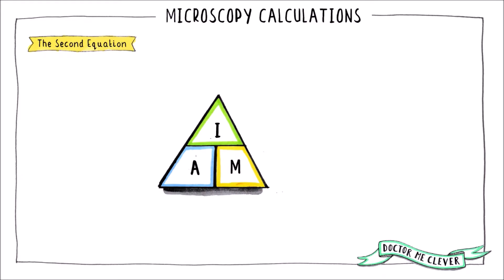The second equation is often referred to as the IAM triangle. If you are not given the powers of the lenses used you can calculate the total magnification if you know the actual size of the specimen and the size of the image.